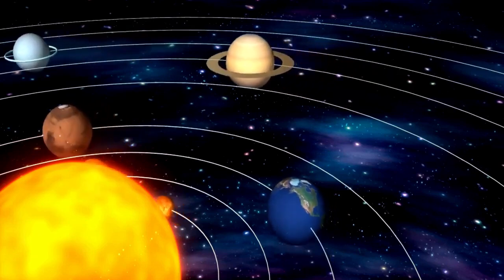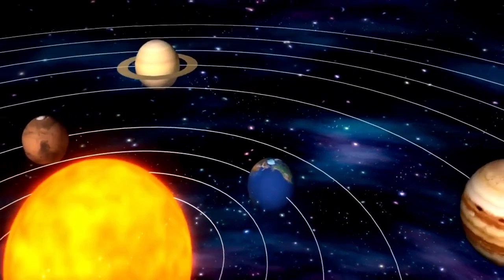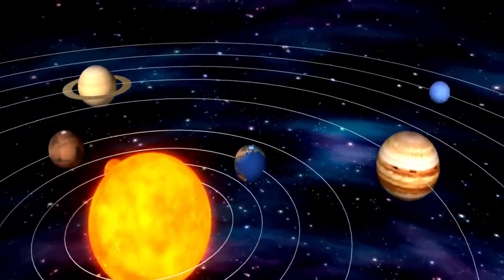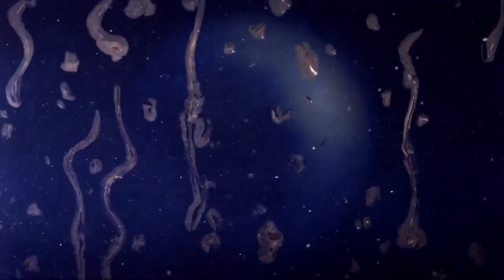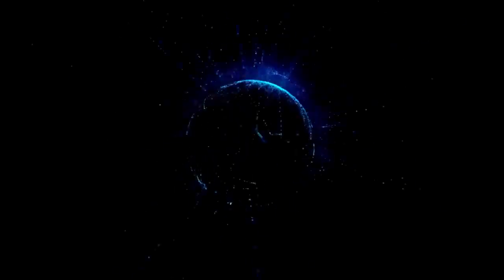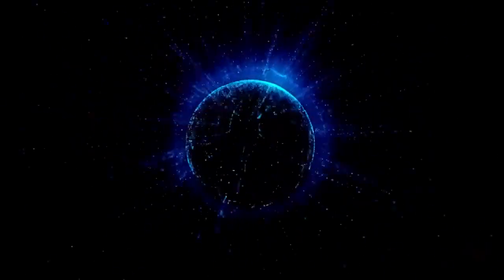This solar wind streams outward in all directions, carrying the Sun's magnetic field across vast distances. Eventually, the solar wind meets the interstellar medium, a region filled with remnants of ancient stellar explosions. Much like oil and water, the solar wind and the interstellar medium don't easily mix, creating a boundary called the heliosphere.